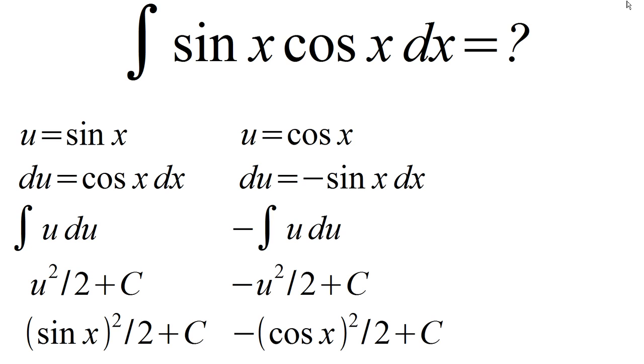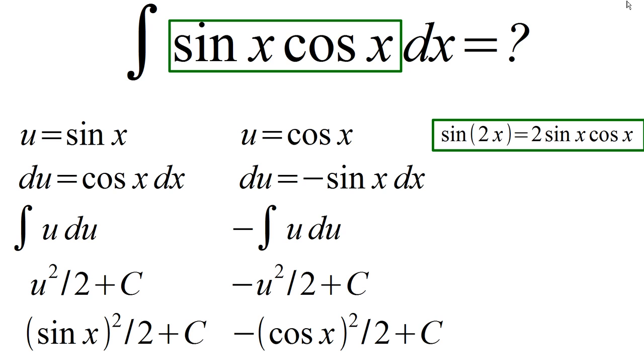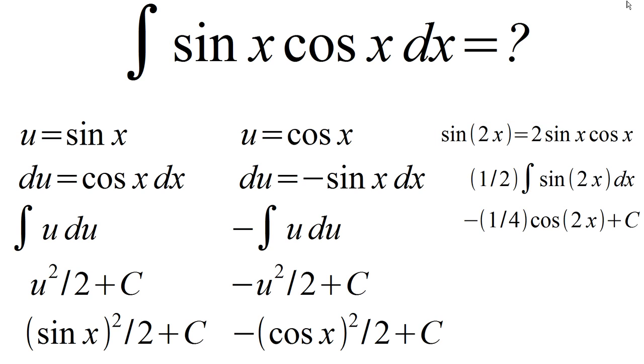This answer is different, but we can even solve the integral in a third way. There is a double angle identity that sine 2x equals two sine x cosine x. This means our integral is equivalent to one half sine 2x. Simplifying, we get a result of negative one fourth cosine 2x plus an arbitrary constant.